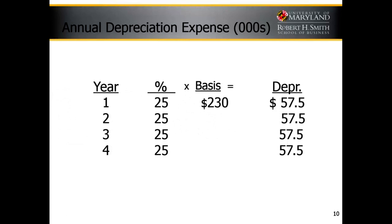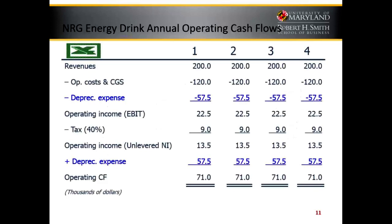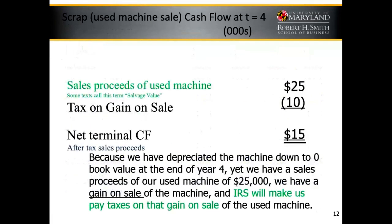We depreciate based on not just the cost of the machine, but if shipping and installation are expensive, we depreciate that rather than writing it off. So our depreciation expense each year under straight-line is the same — $57,500. Here are our operating cash flows. If you click on my Excel link, you'll see I've got these calculations in there.